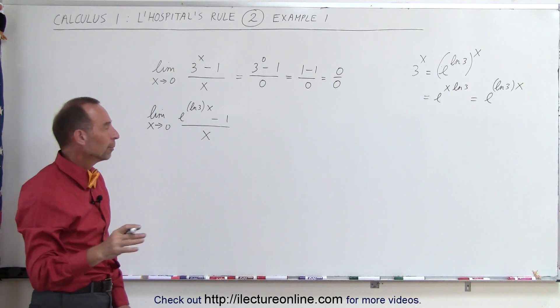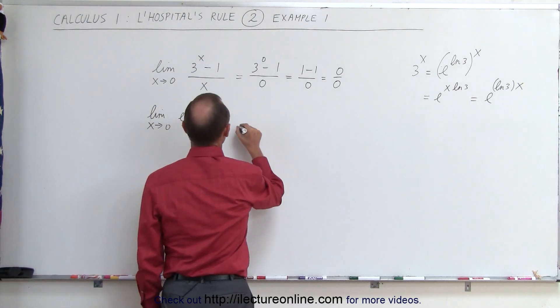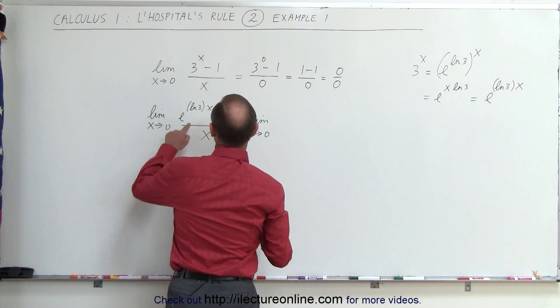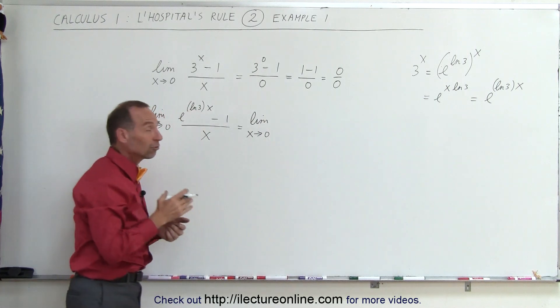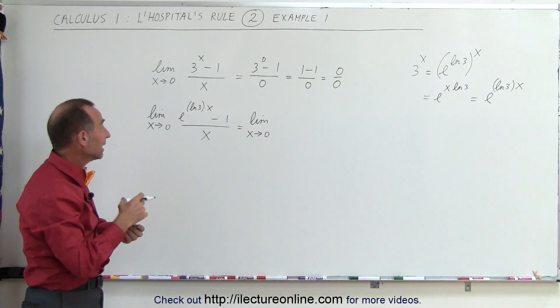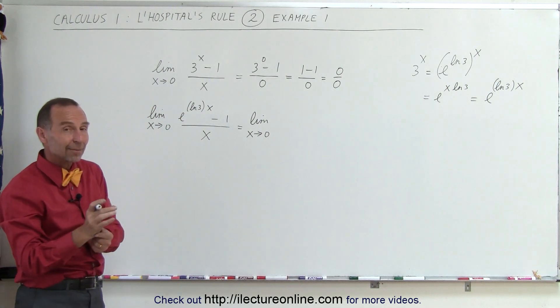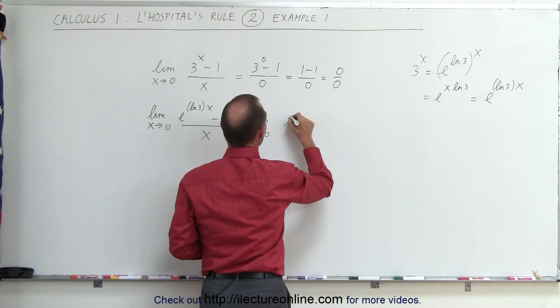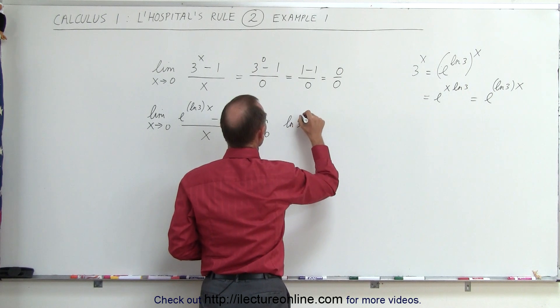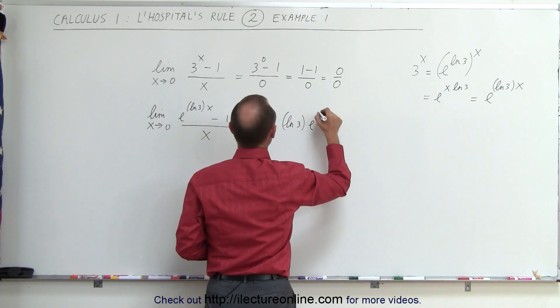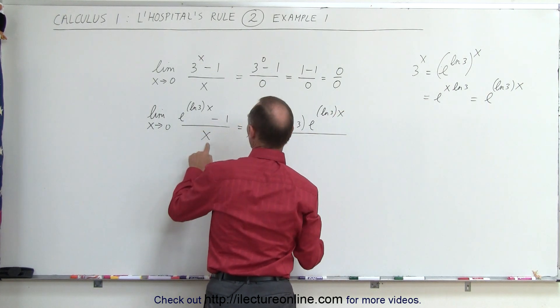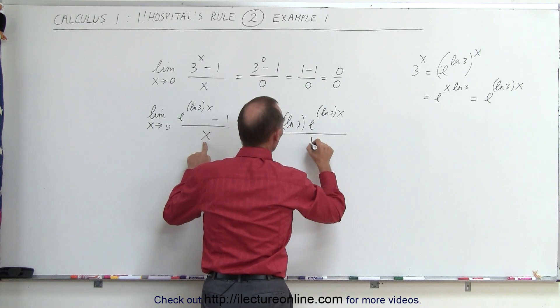We're now going to take the derivative of the numerator and of the denominator. This would be the limit as x approaches 0. If we take the derivative of e to the natural log of 3 times x, it's still e to the natural log of 3 times x times the derivative of the exponent, which is the natural log of 3. This becomes the natural log of 3 times e to the natural log of 3 times x. The derivative of minus 1 is 0, and we divide that by the derivative of the denominator, which is simply 1.